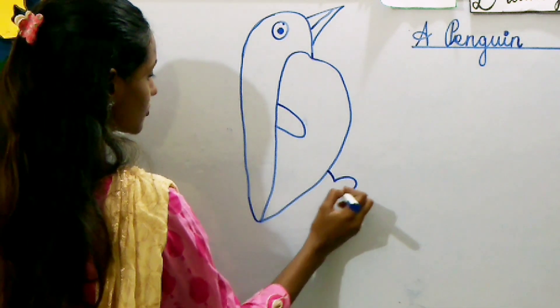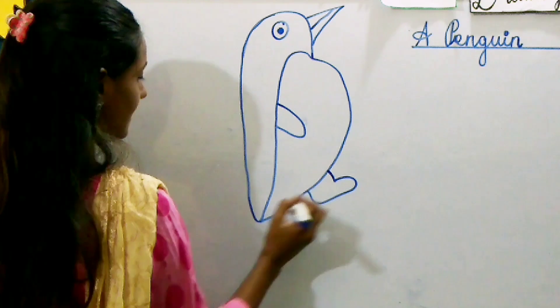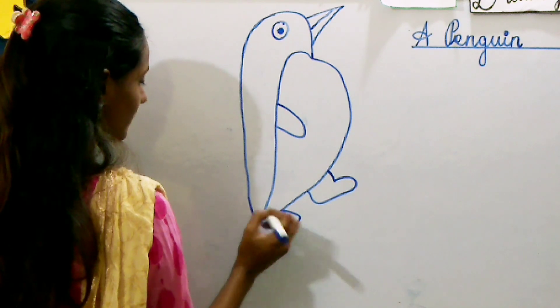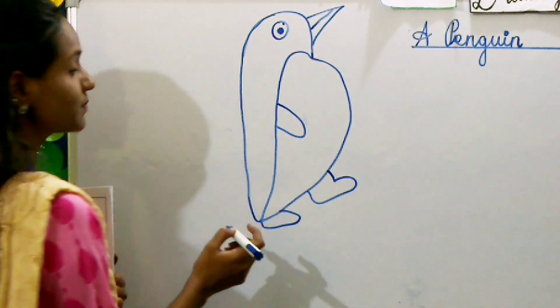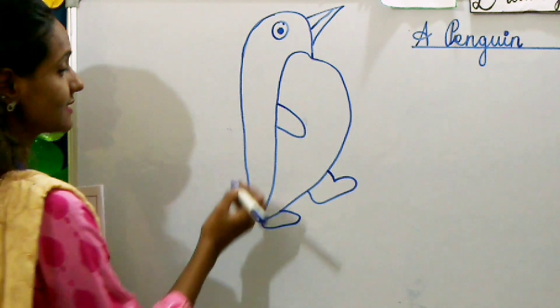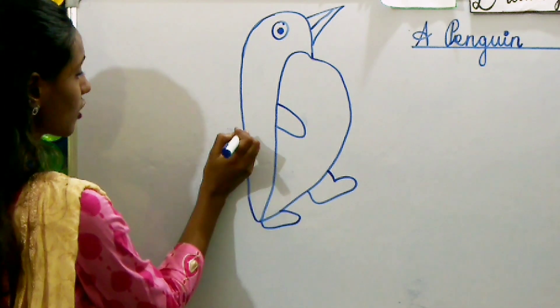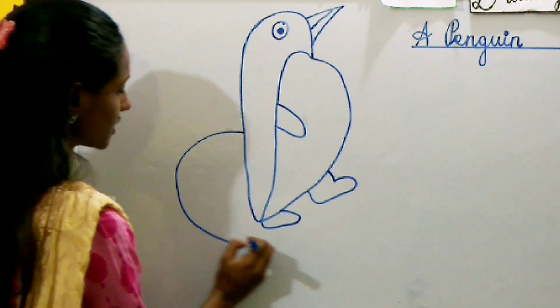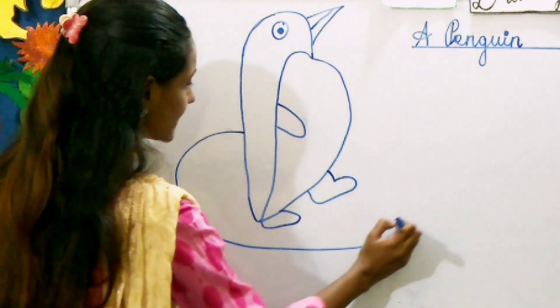Next step, we will draw the legs of the penguin. Now this penguin is standing on a block of ice, so we will draw the block of ice.